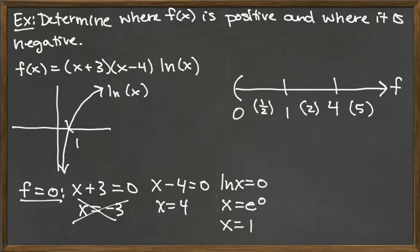All right, so let's look individually. The test value 1/2, when we plug it into each factor: we've got 1/2 + 3 would be positive, we've got 1/2 - 4 would be negative.